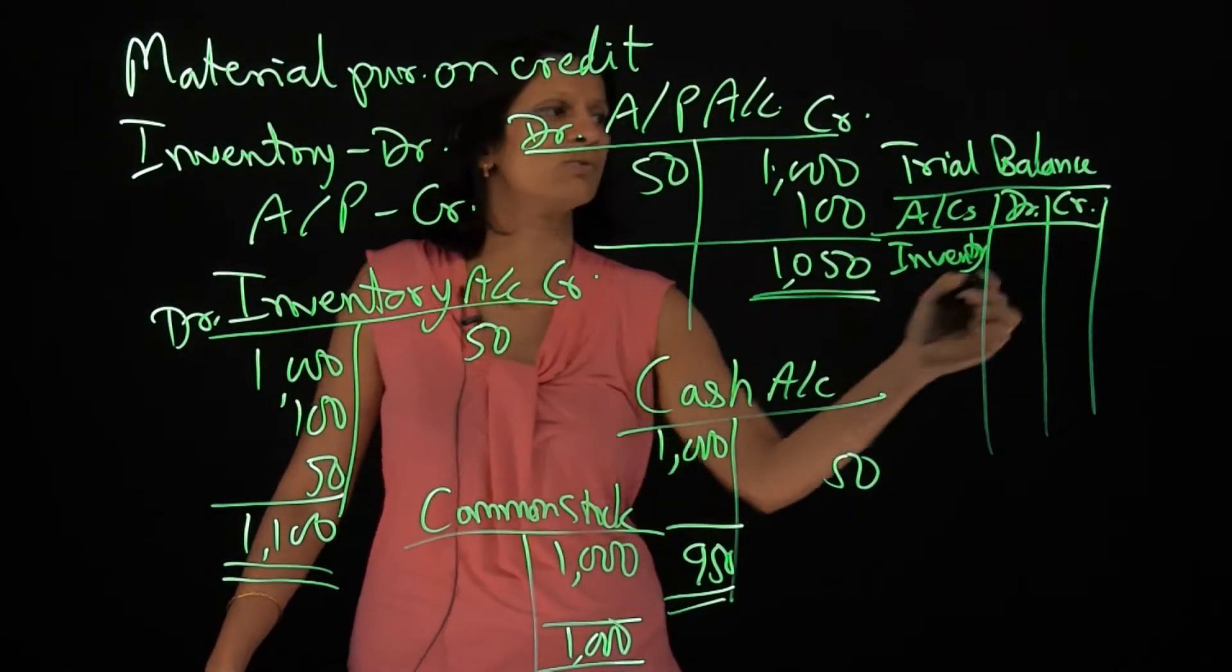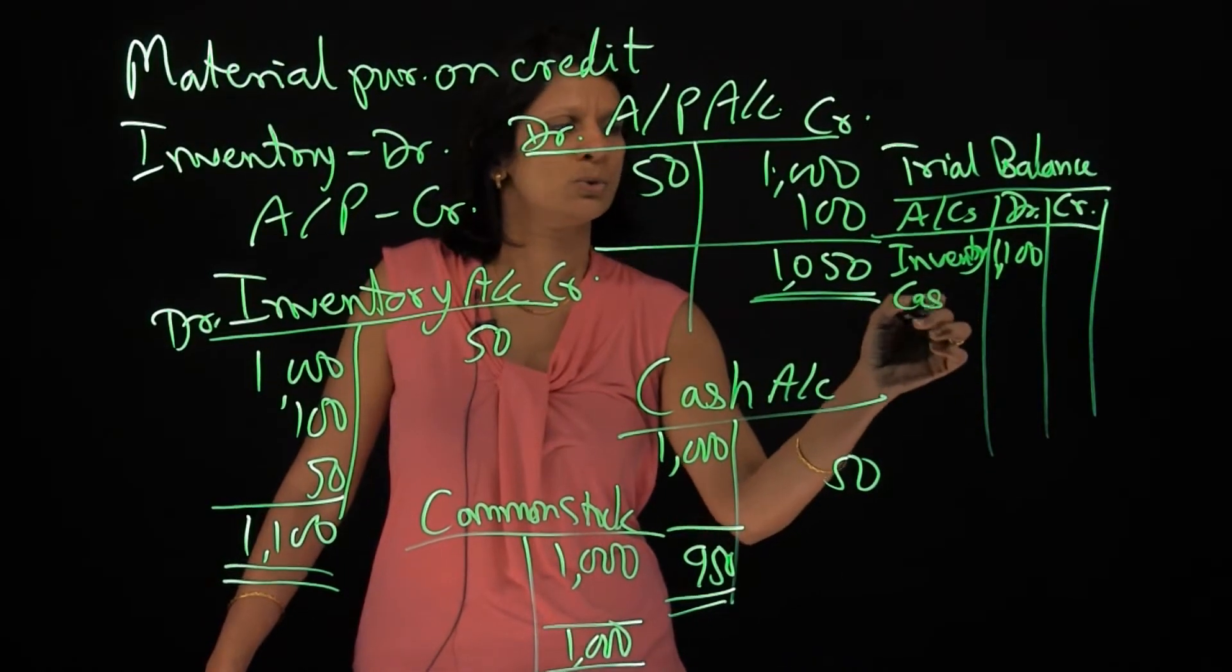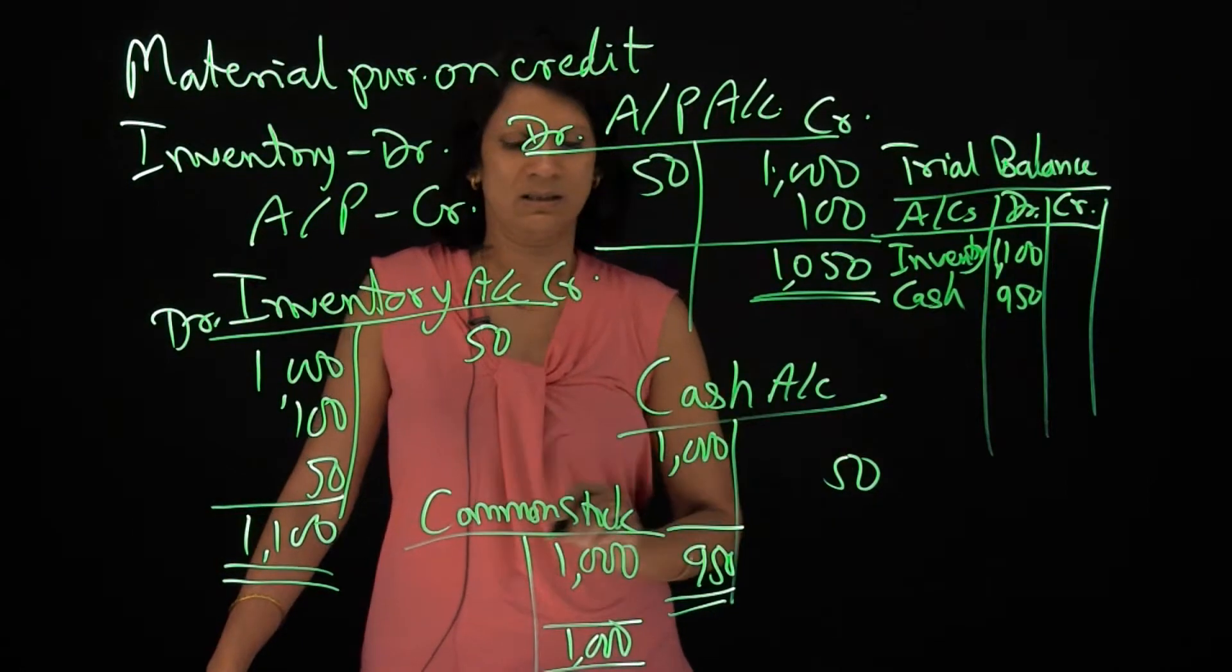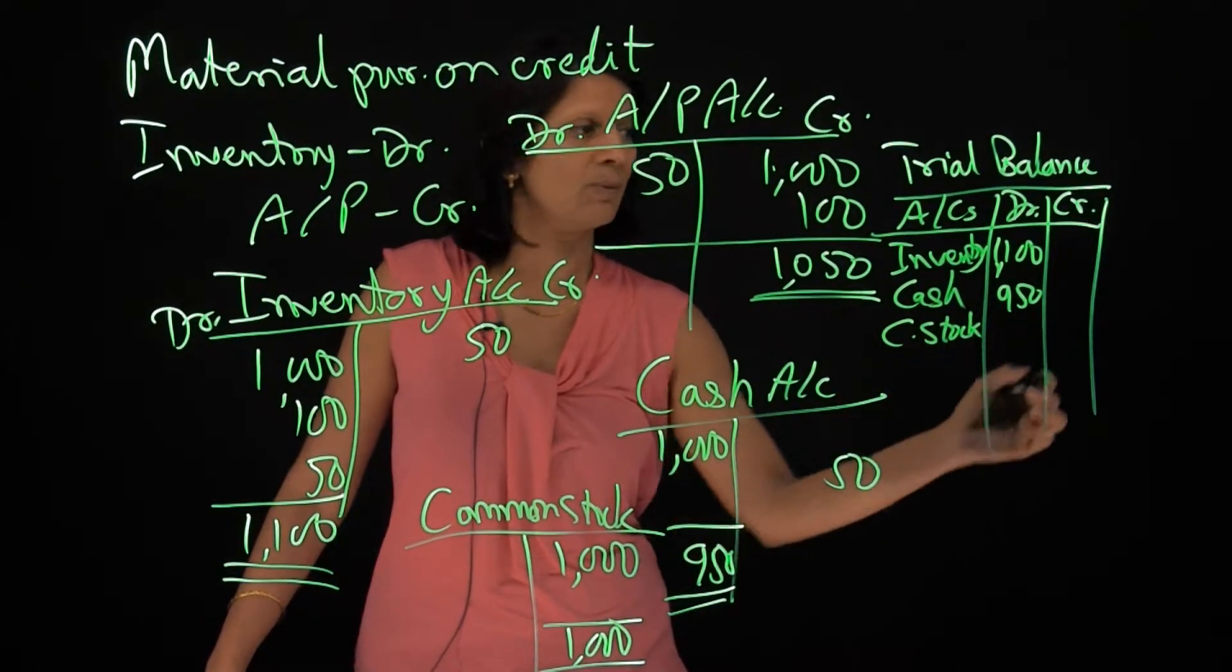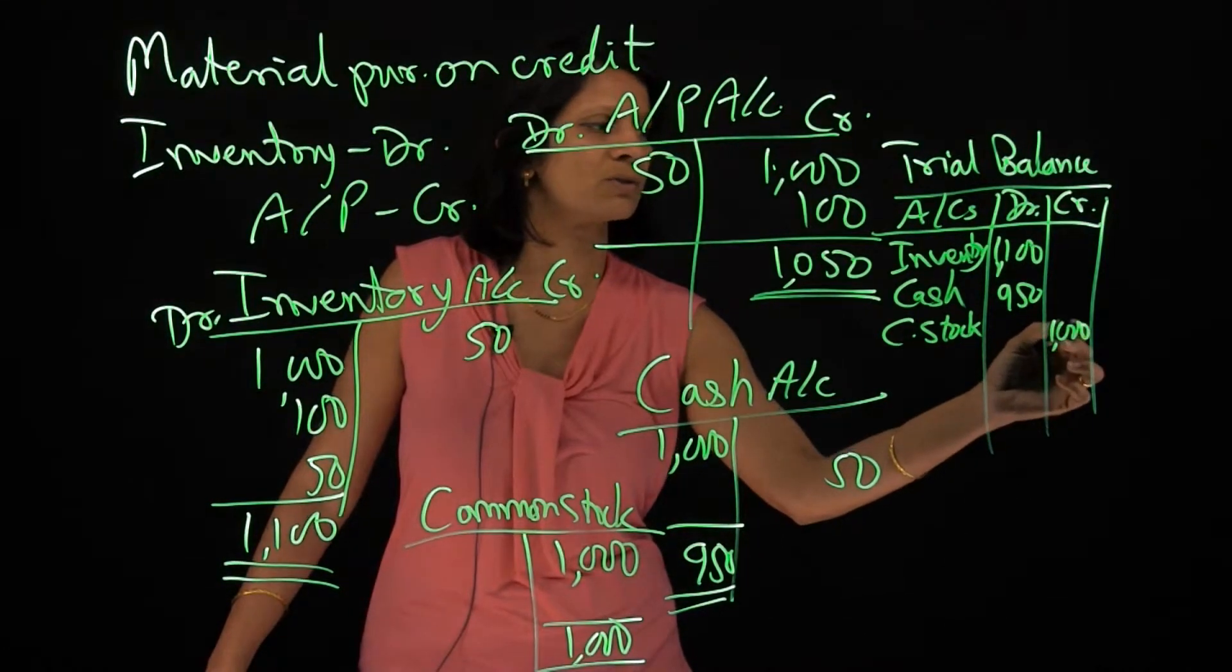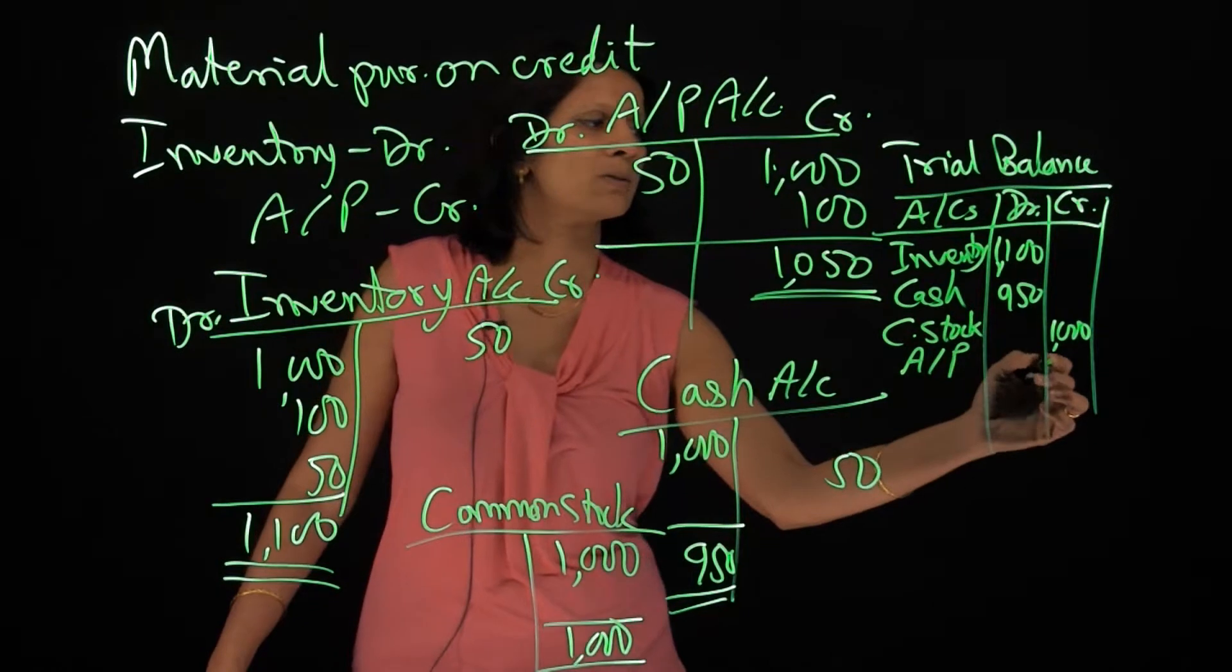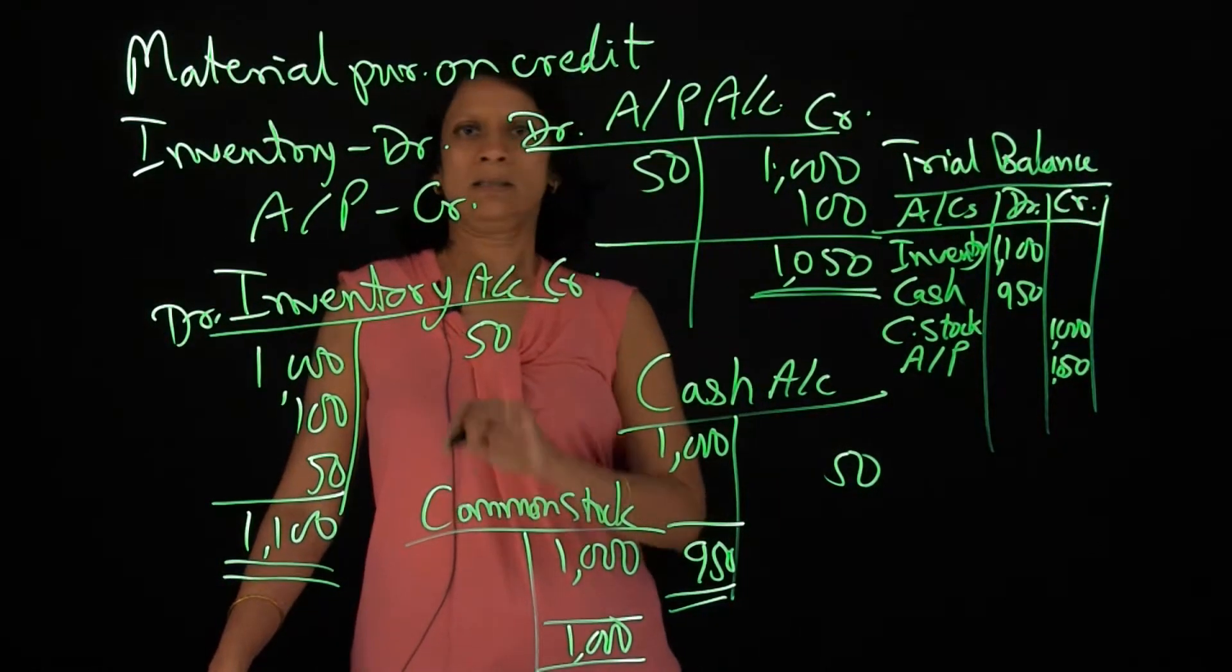I have a debit balance of $1,100. Then my cash goes over here. I have a debit balance of $950. Then my common stock goes over here. I have a credit balance of $1,000. Then I have accounts payable. I have a credit balance of $1,050.